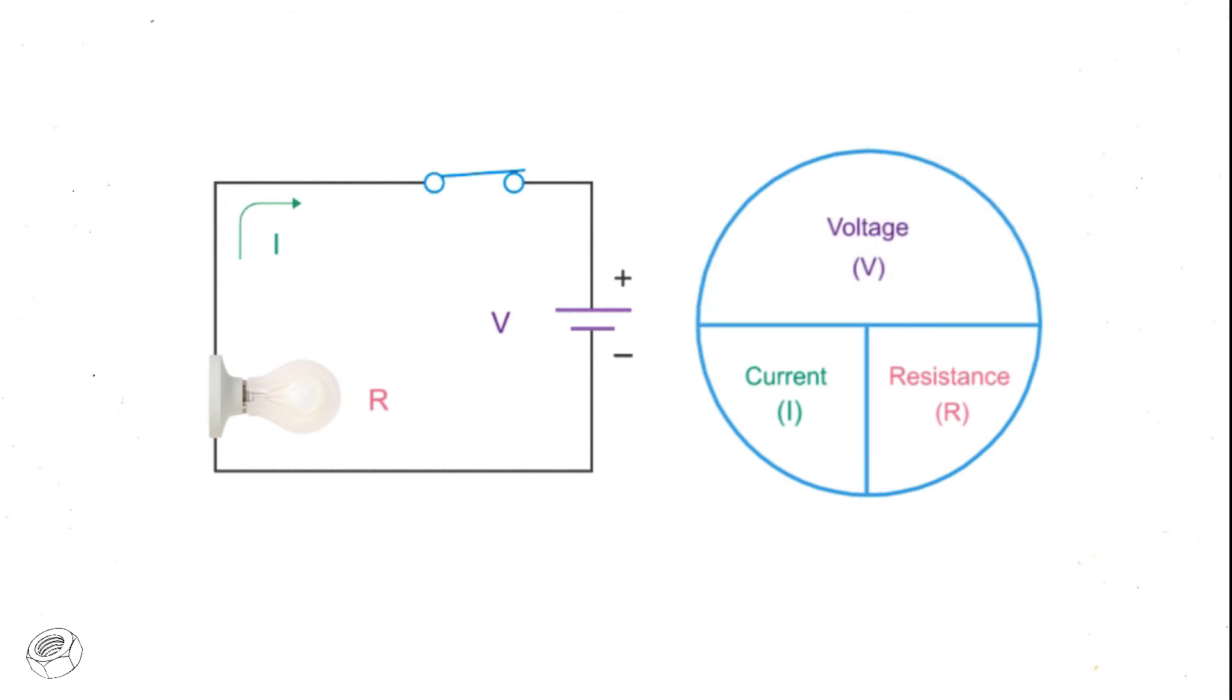If you know the voltage in a circuit is 200 volts and the amps is 0.25, then 200 volts divided by 0.25 is 400 ohms.